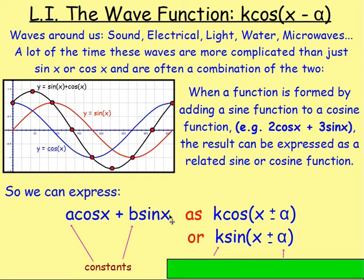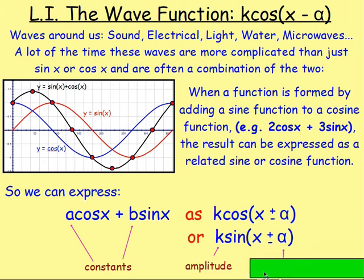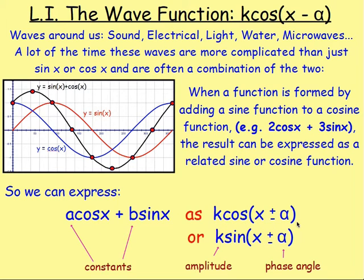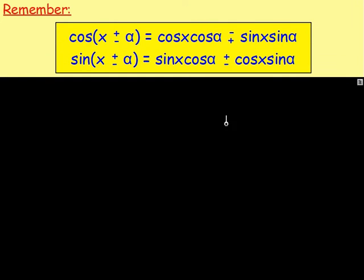For example, seven cos x minus three sin x. The value of k is your amplitude and alpha is your phase angle. How do you write a combined sine and cosine function in terms of just sine or cos? You write it as k cos(x ± α) or k sin(x ± α) — and that should ring some bells, because in the last chapter we looked at the addition formulae, and those expressions cos(x ± α) or sin(x ± α) can be expanded and written in that form.